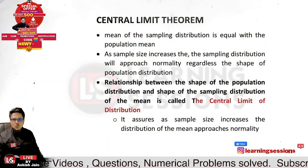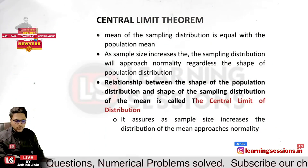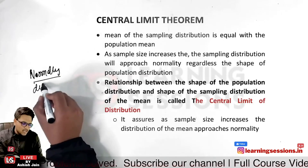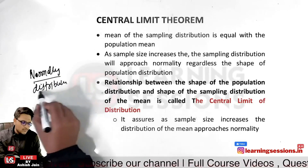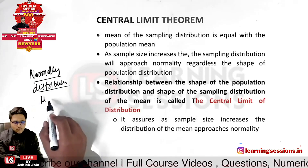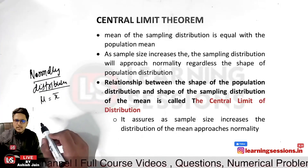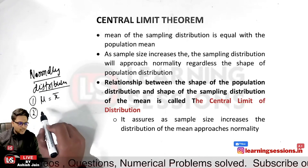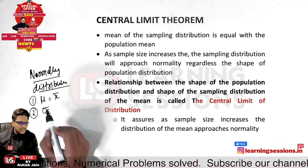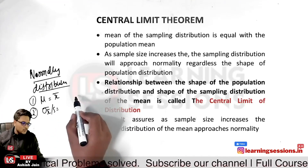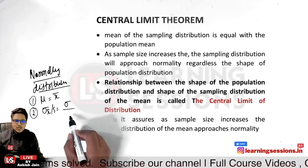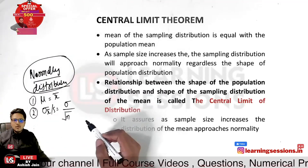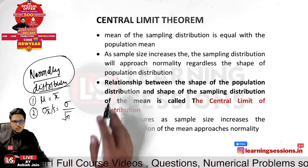This is related to the central limit theorem. In the last video, we covered that if the population is normally distributed, we inferred two things: first, mu (population mean) equals the mean of the sample itself; and second, the standard error of the mean, sigma x-bar, equals the population standard deviation divided by the square root of n. This holds only when the population is normally distributed.